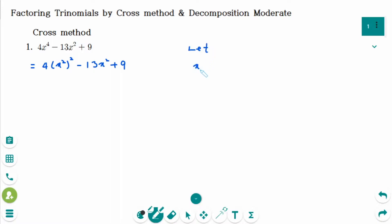Let x squared be large A. This becomes 4A squared minus 13A plus 9.